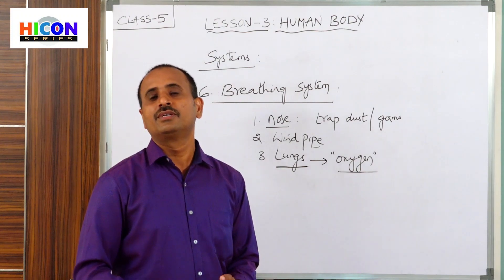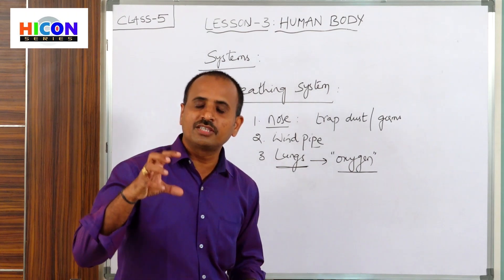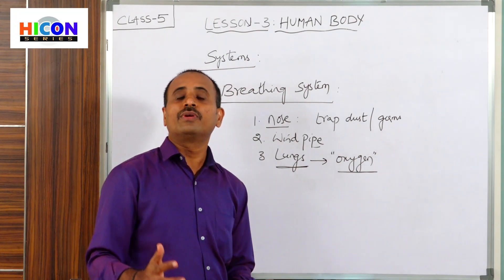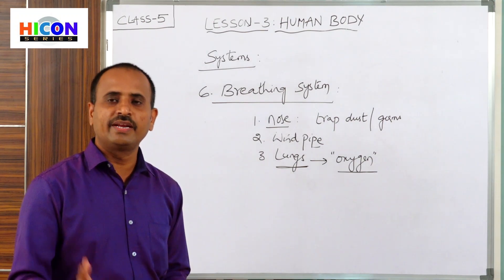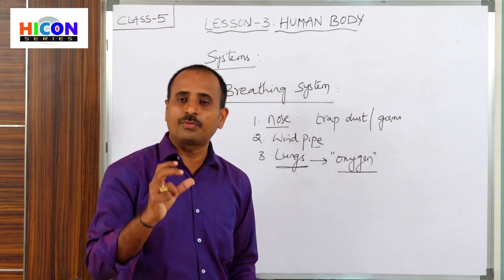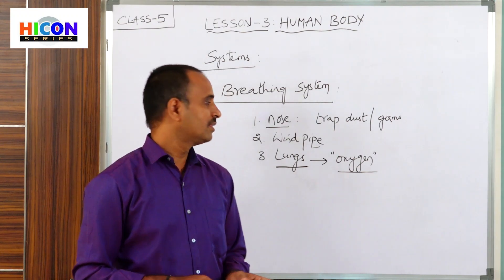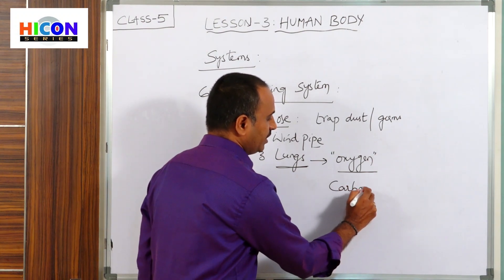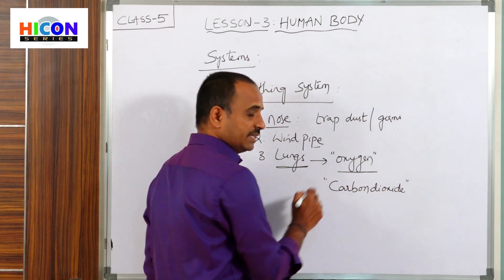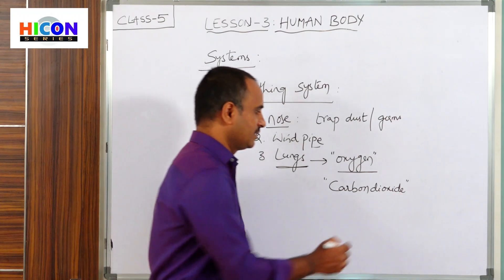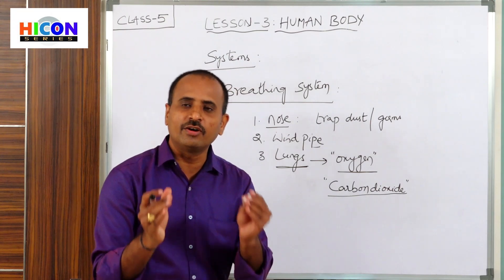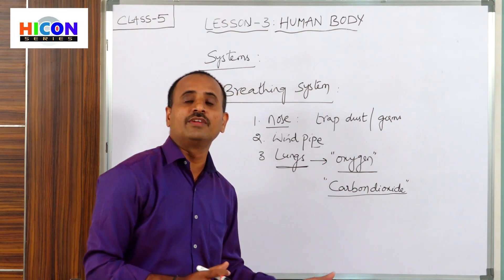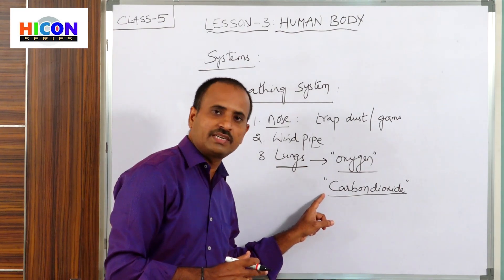How does each body part get energy? With the help of food and oxygen. The oxygen burns the food, and energy is released. That energy is used by every part of our body to perform activities. During the process of burning food, another gas is also released — that gas is carbon dioxide.